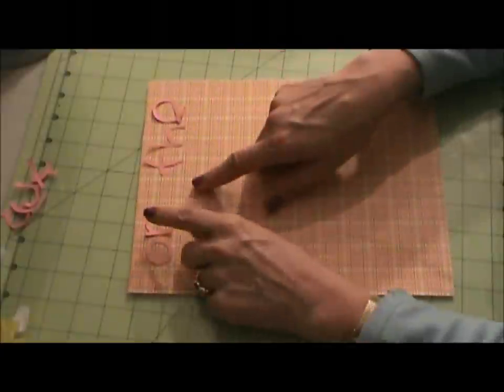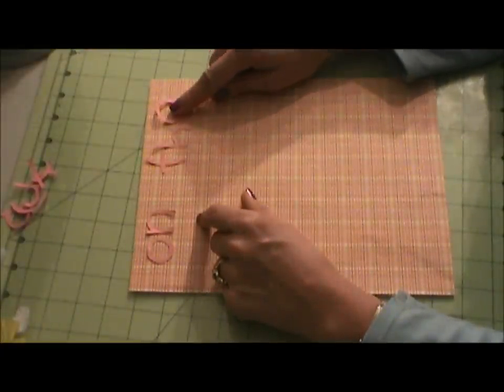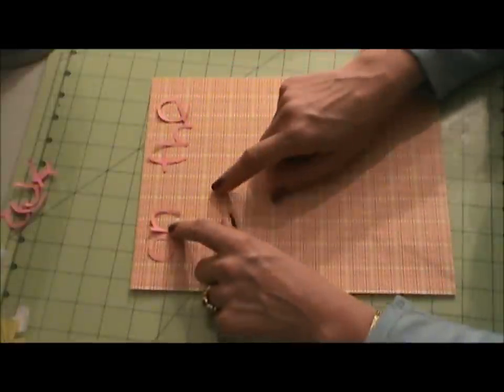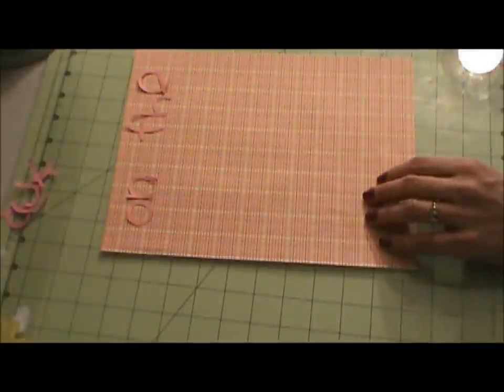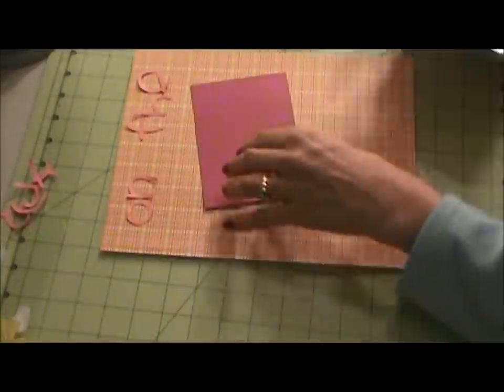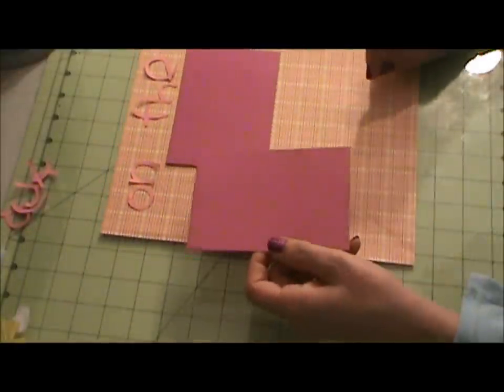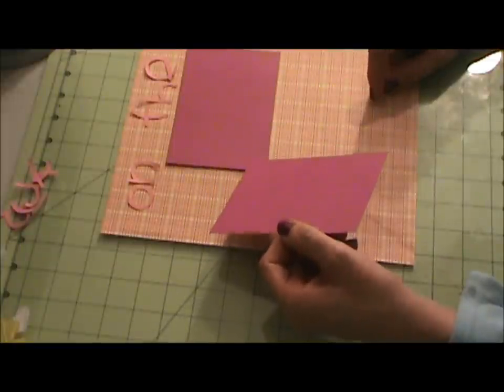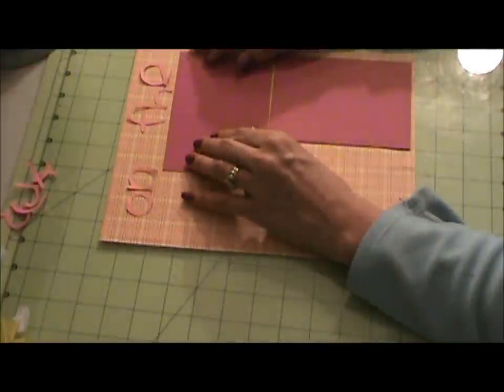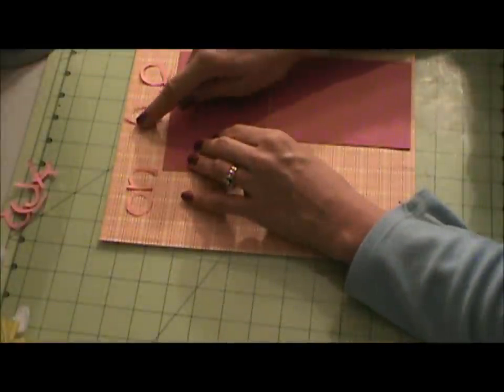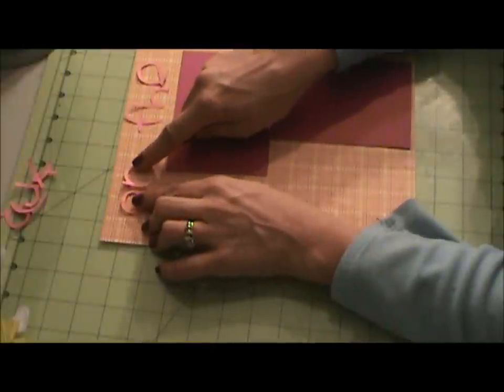I'm going to use this pink line right here to help me line up my letters just right there. My title is from All Mixed Up and it's an inch high, and my photo mats are five and a quarter by five and a quarter by three and three quarters.